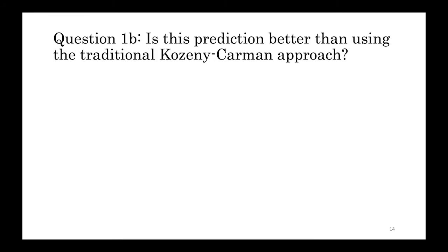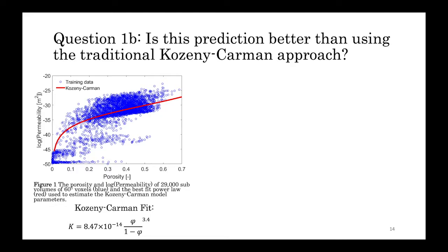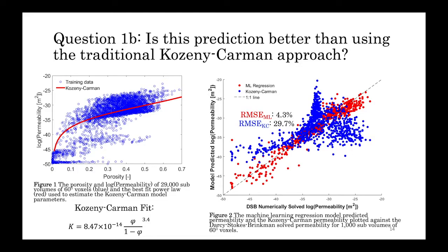But then we thought, okay, but how much better is this approach than the Kozeny-Karman approach? So we fit a power-law curve to the data as best we could and came up with some reasonable Kozeny-Karman model parameters. Okay, we know it's going to be bad, but how bad? And as it turns out, it's pretty bad. A root-mean-squared error of 29% and a rather striking inability to predict the lower permeability values.